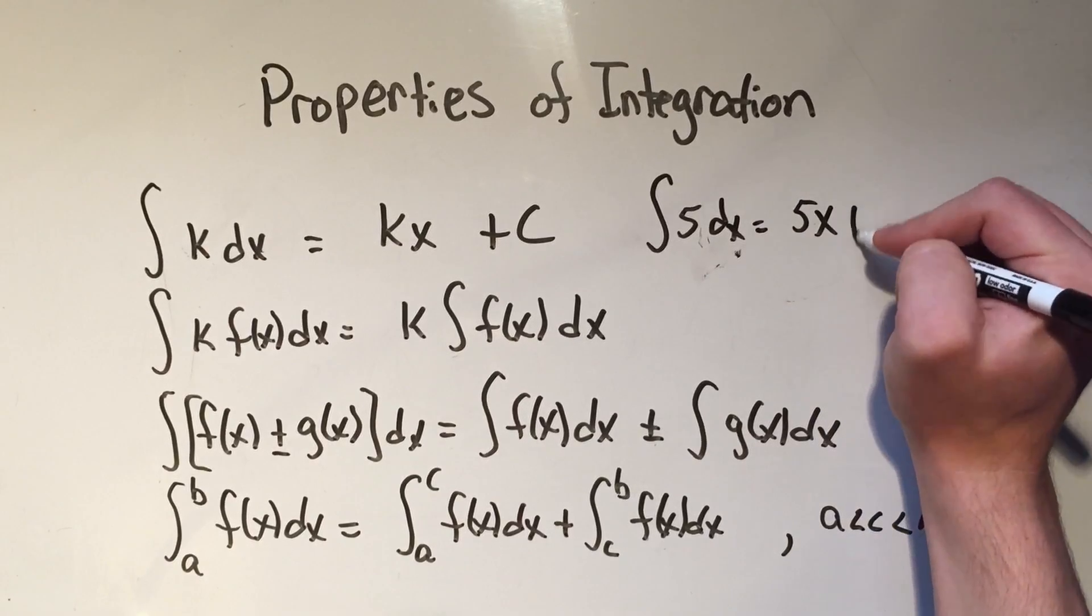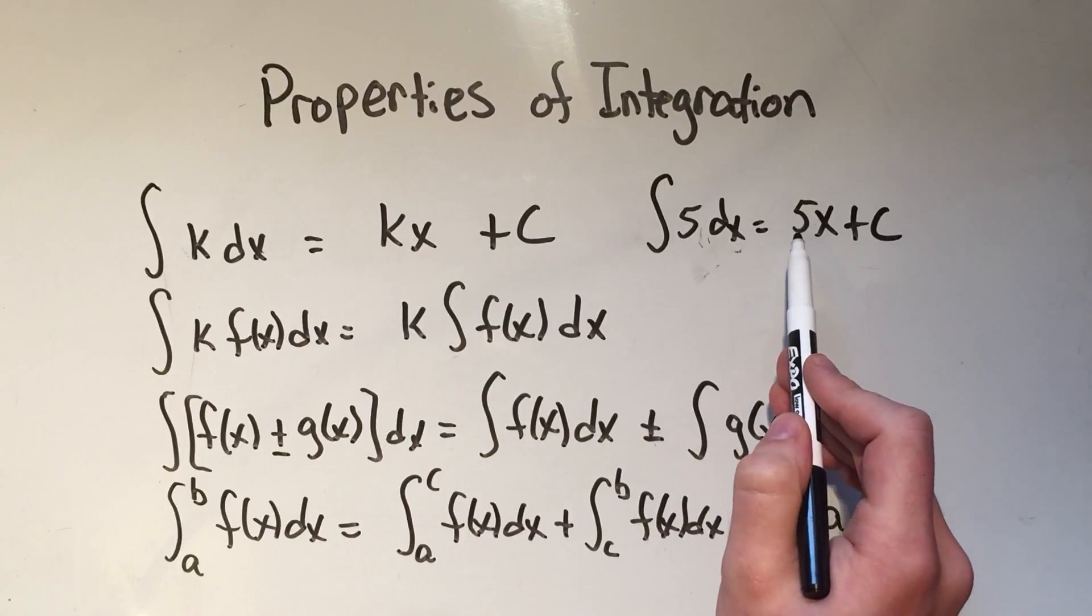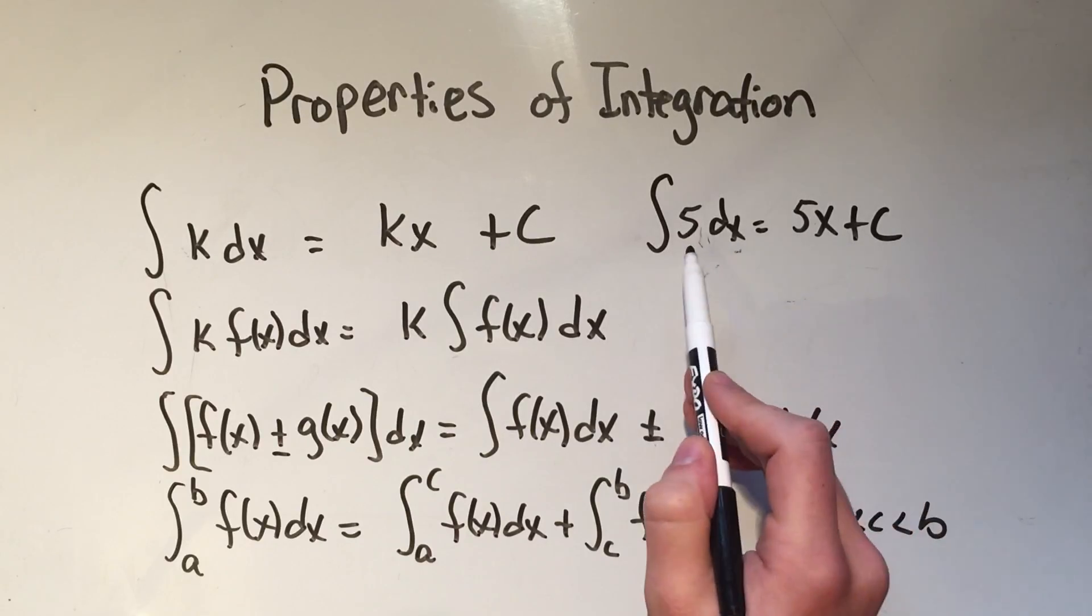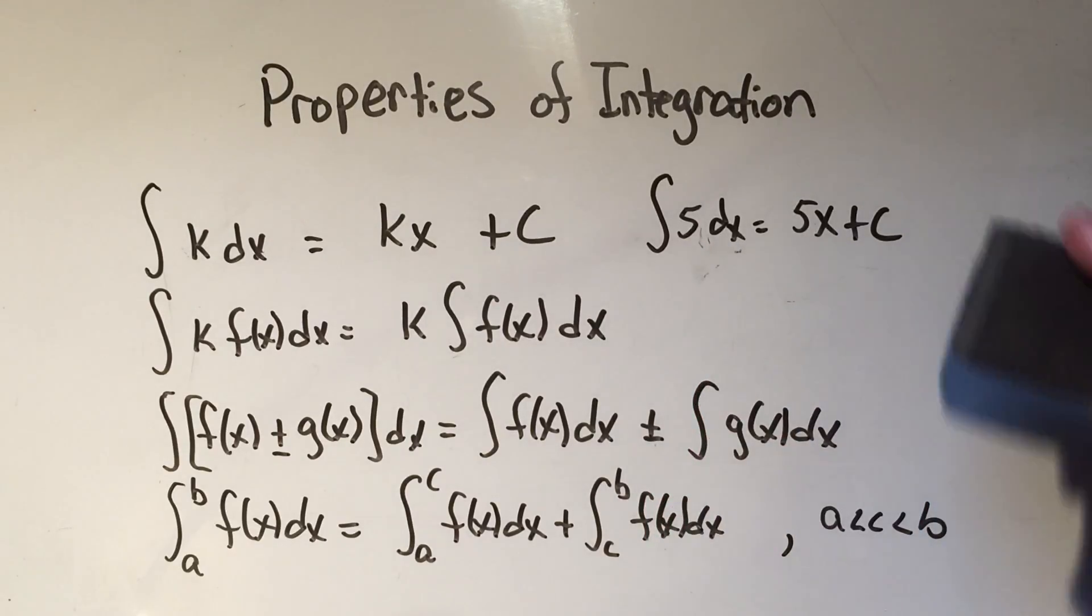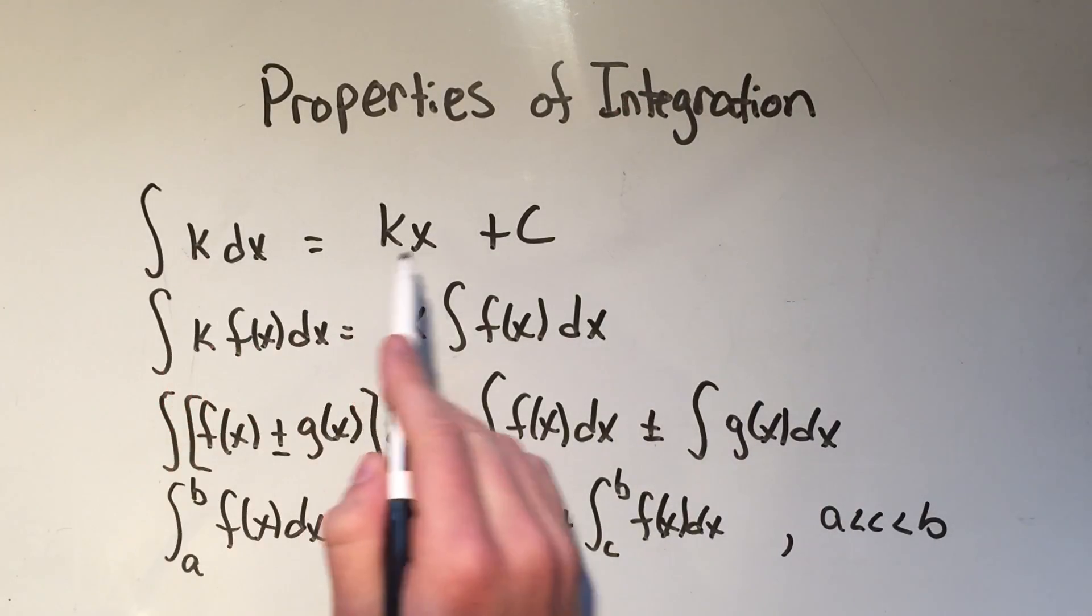then my answer would be 5x plus c. And that makes sense, right? Because if you take the derivative of 5x, you get 5. So that's the first one. The integral of a constant is just a constant times x.